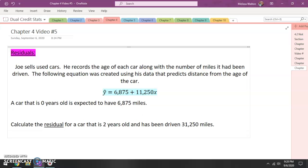Awesome. All right, now slope. Our slope is 11,250. So this would be for every year a car is driven, the mileage is expected to increase by 11,250 miles.